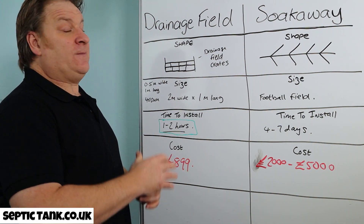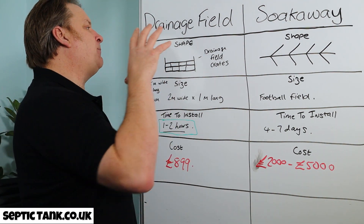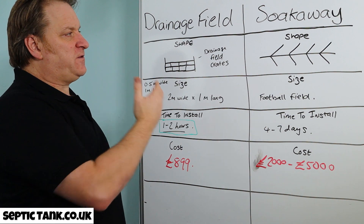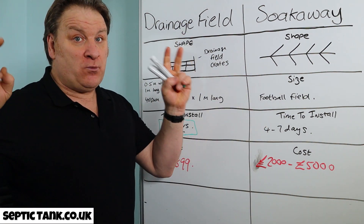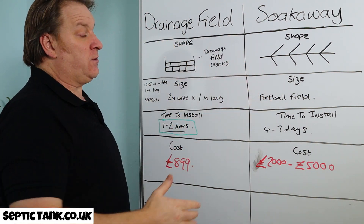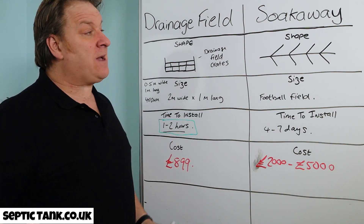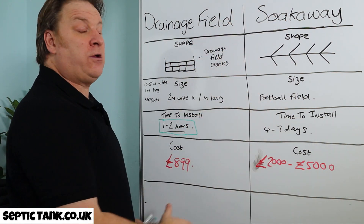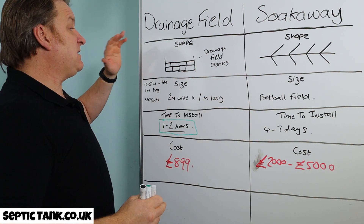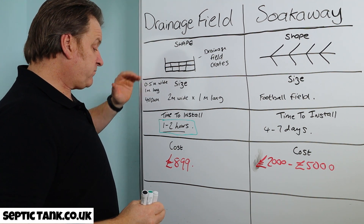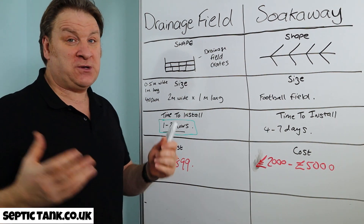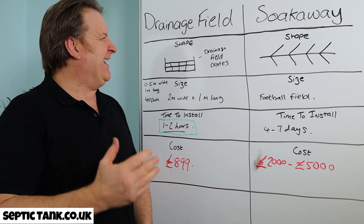So to summarise: when you hear the word 'drainage field' today, it pertains specifically to the drainage field for a septic tank. 'Soak away' now means rainwater soak aways. You cannot use a soak away for a drainage field, and you cannot use a drainage field for a soak away. The new way of doing things is easy to install, doesn't take long, and saves you three to five thousand pounds in the process.